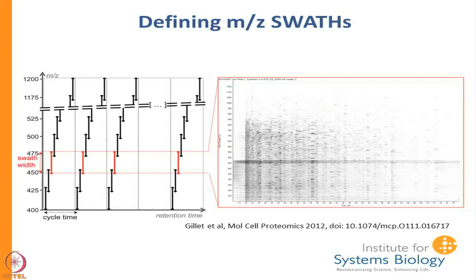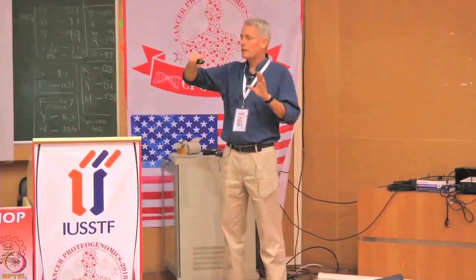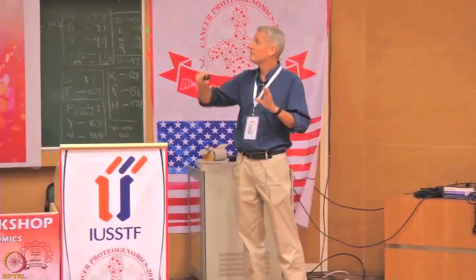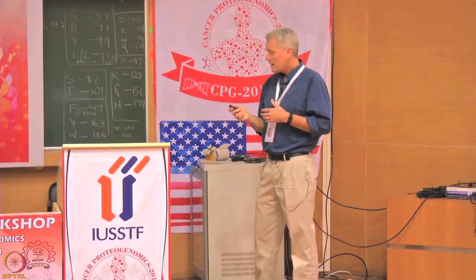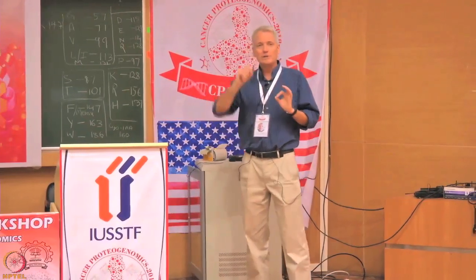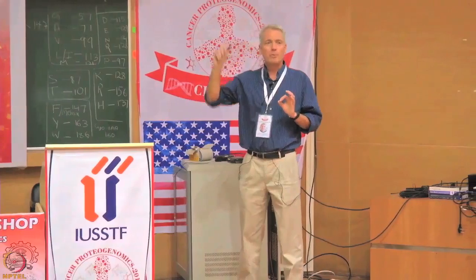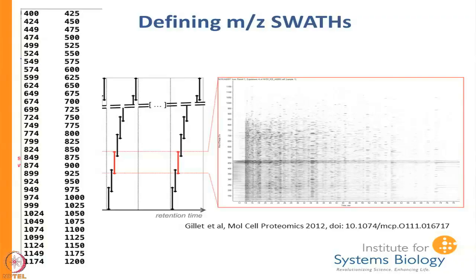You have to consider how peptides elute. Peptides come off of the column, start eluting, reach a maximum, and then come back down to baseline. Ideally you would get multiple points across this peak, but because you are taking all your time doing all these different swaths, you run the risk of not getting enough data points across every peak.